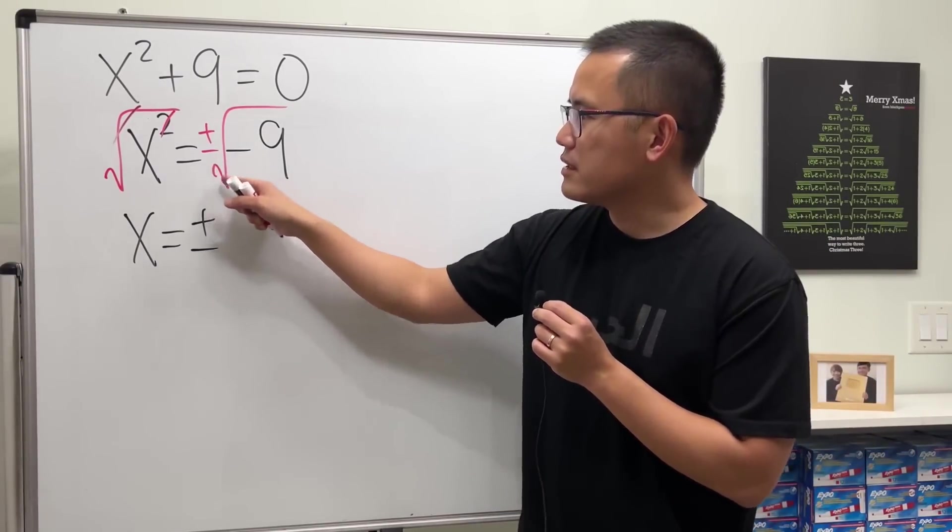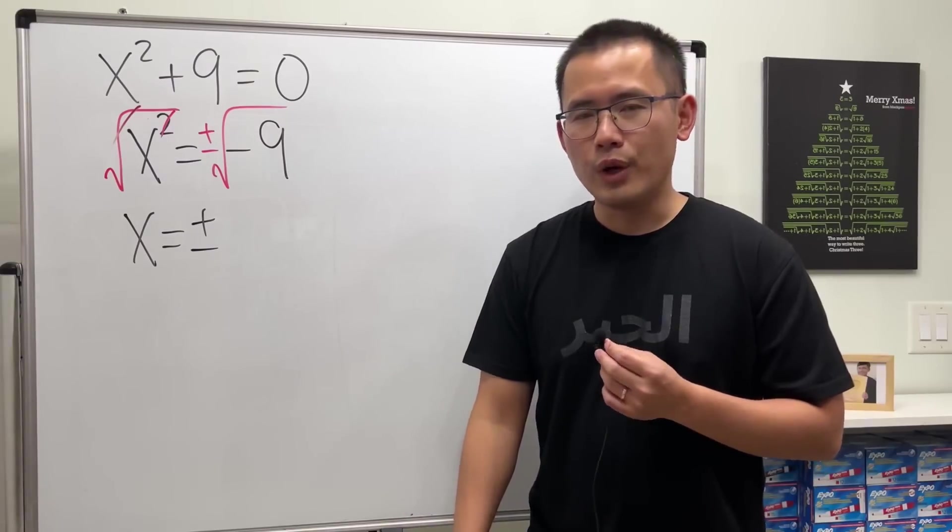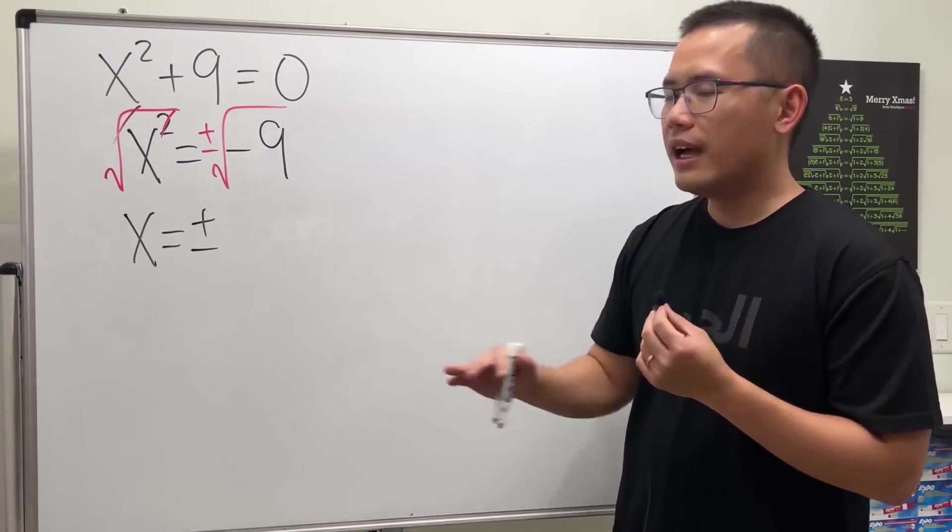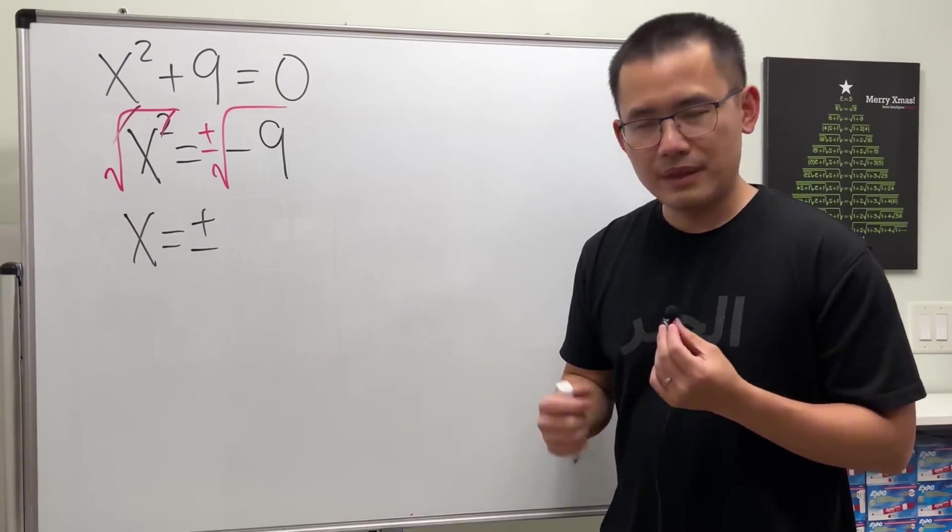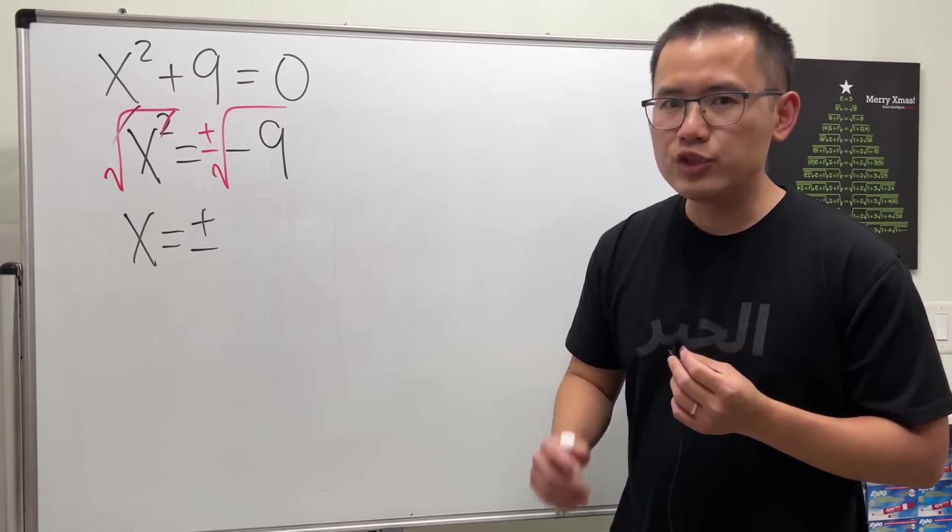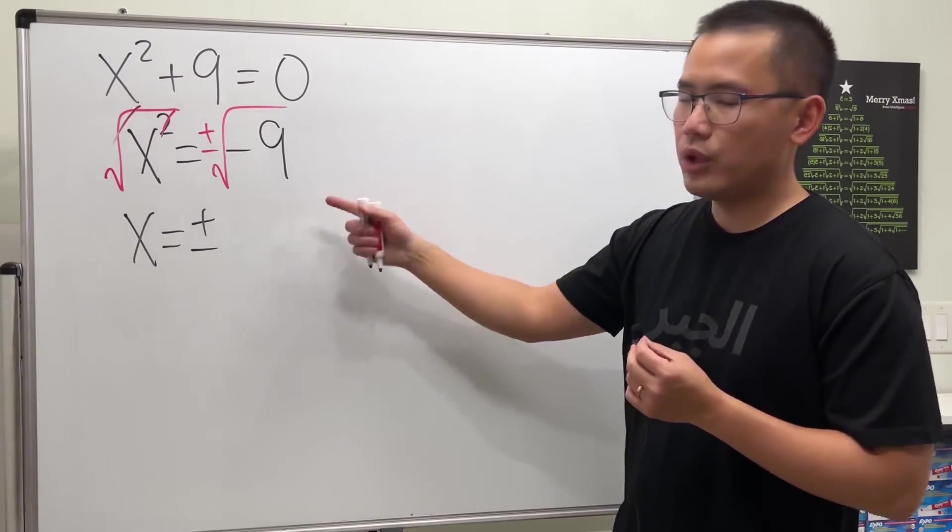Now you might be wondering, can we really have a negative inside of the square root? Well, not in the real world. So if you want to say this equation has no real solution, that's totally okay. Or, if you're willing to use imaginary numbers, then you can continue like so.